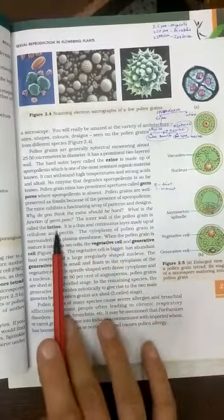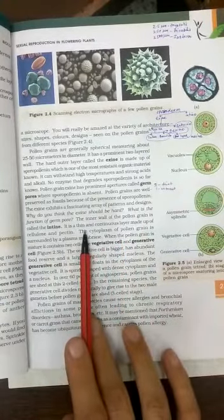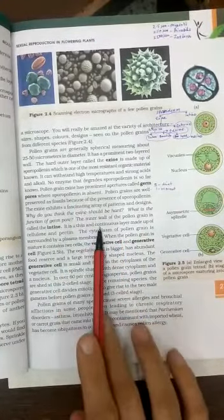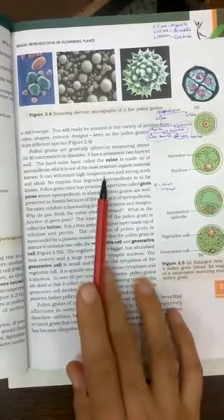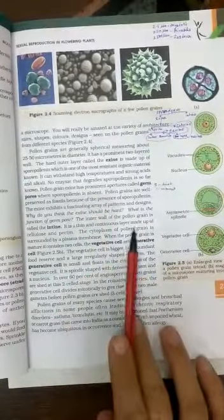And the inner layer is called as the intine. Intine is thin. Exine is thick. Intine is continuous. Exine is discontinuous because it has the germ pore. And then, it is made up of cellulose and pectin.